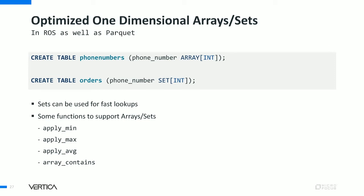Another feature coming in the 10.0 release is support for optimized one-dimensional arrays and sets for both ROS and Parquet external tables. You can create an internal table called phone numbers with a one-dimensional array — for example, phone numbers of array type int. You can also have sets, which are similar to one-dimensional arrays but optimized for fast lookups: they have unique elements and are ordered. If fast lookup is your use case, sets will give you very quick element lookups. We have also implemented functions to support arrays and sets, such as apply_min and apply_max, which are scalars you can apply on an array element to get the minimum or maximum element.